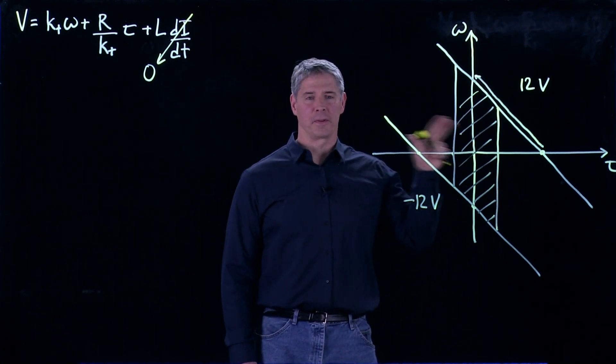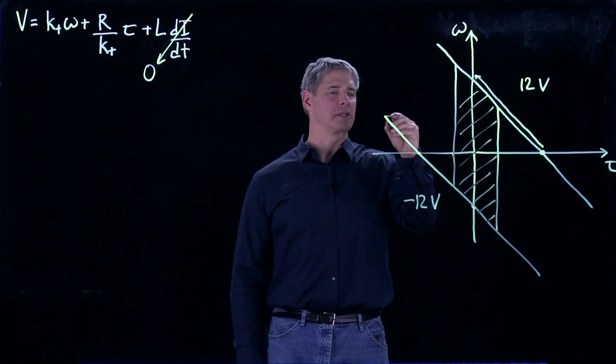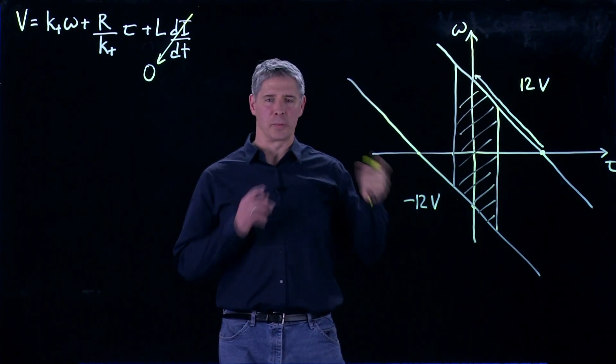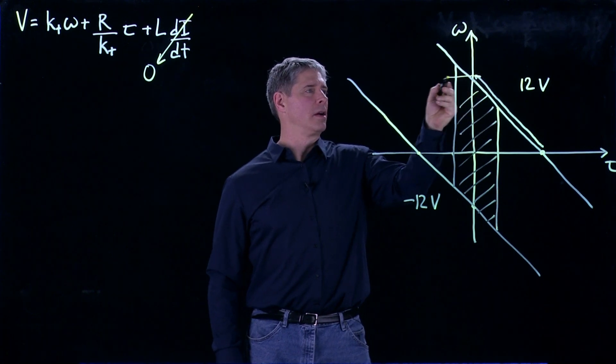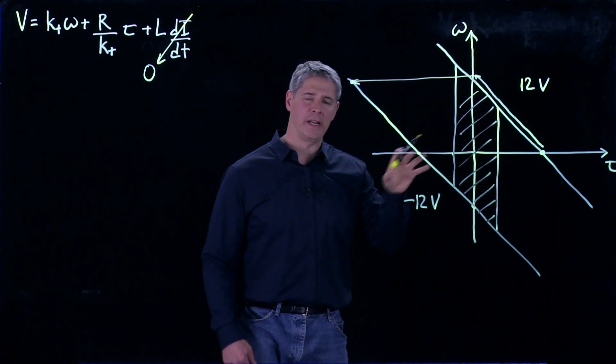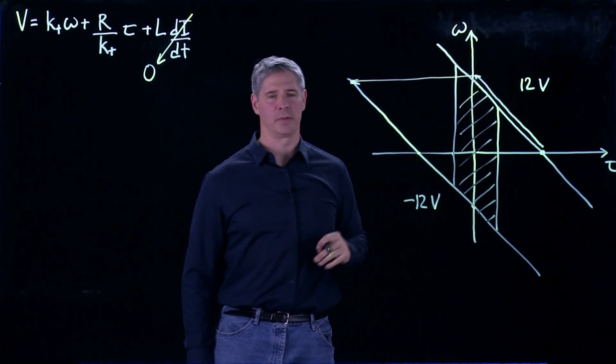Now, from there, let's say we switch from 12 volts to minus 12 volts across the motor. And let me extend this up so we see what happens. Instantaneously, when we switch the voltage, we're going to go from operating here across to this point. So our speed hasn't changed, only the voltage. So we jump from the 12-volt curve to the minus 12-volt curve.